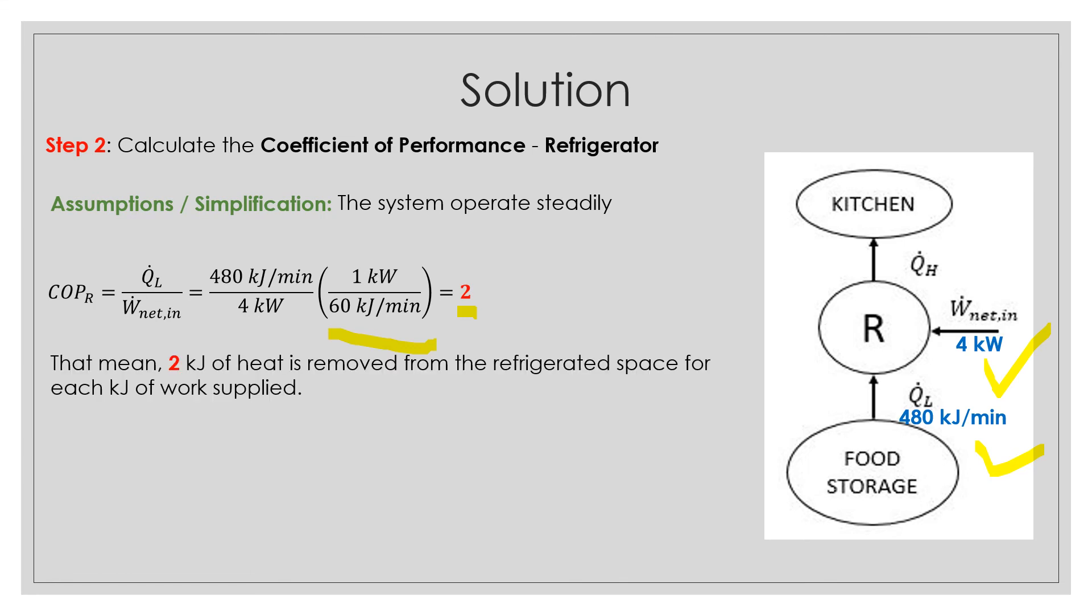The meaning of the 2 refers to 2 kJ of heat is removed from the refrigerated space for each kJ of work supply. In this case is the work net in.